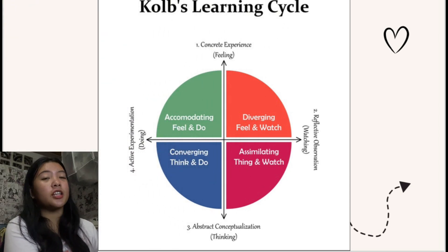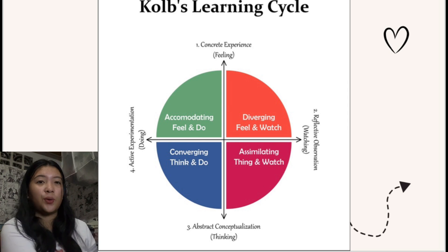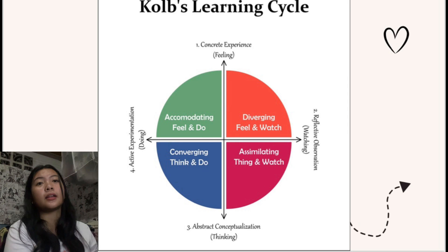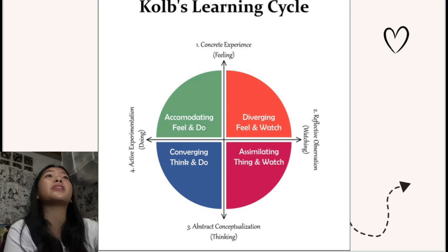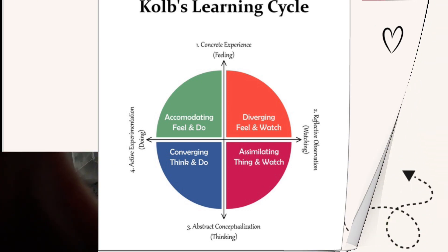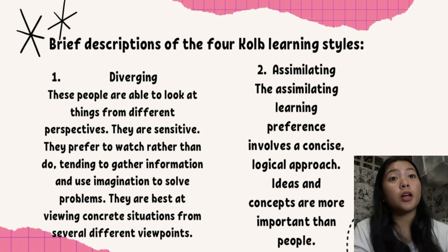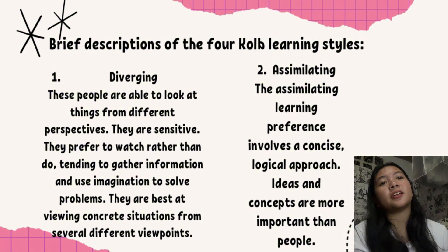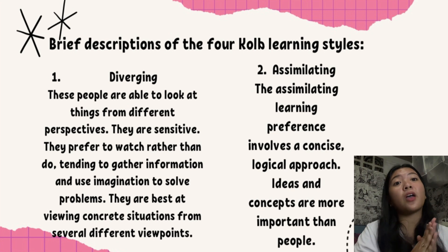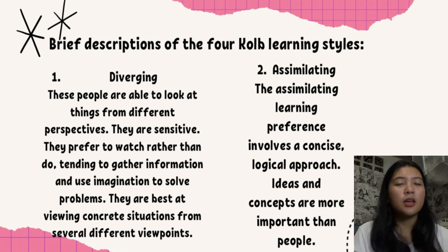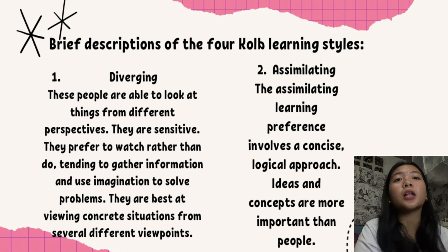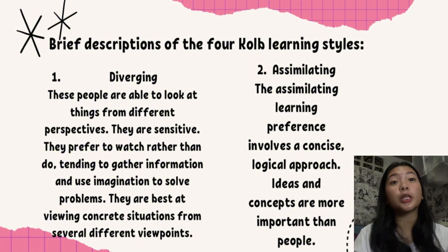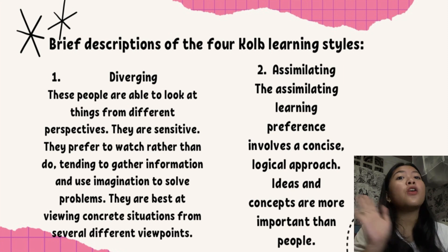The first learning style is diverging. These people are able to look at things from different perspectives. They are sensitive and prefer to watch rather than do, tending to gather information and use imagination to solve problems. They are best at viewing concrete situations from several different viewpoints. We call this style diverging because these people perform better in situations that require idea generation — for example, brainstorming.